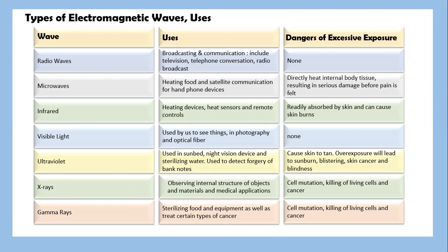Visible light: we use it to see things, in photography and optical fiber. In terms of the implication, there is none.